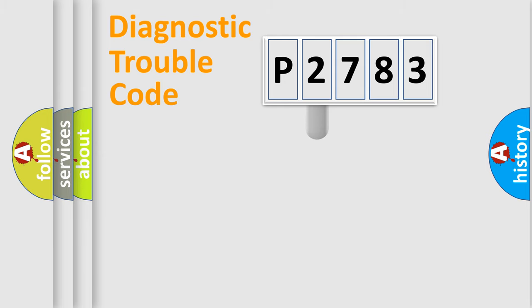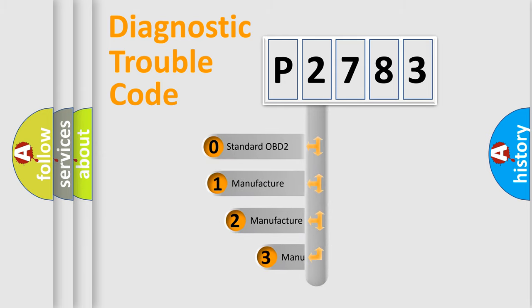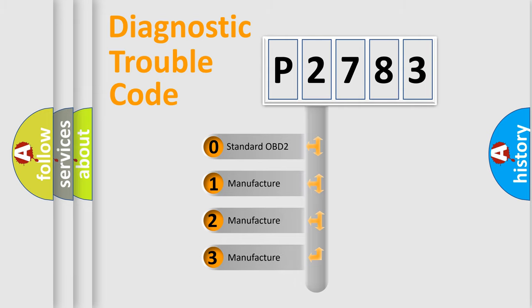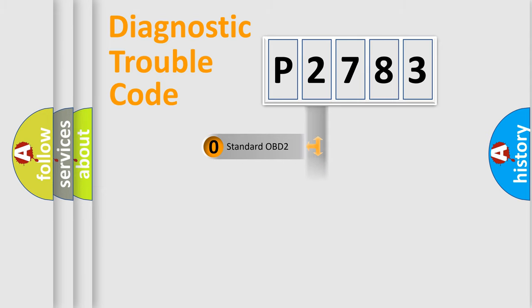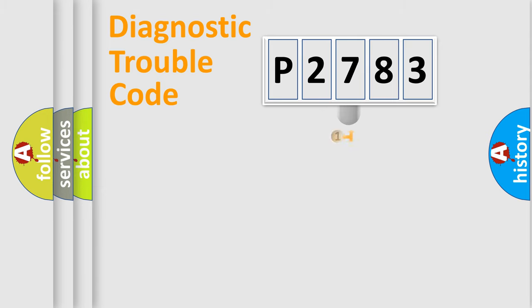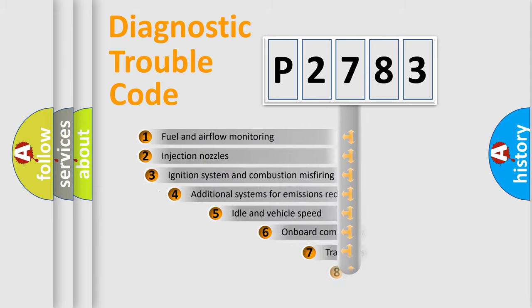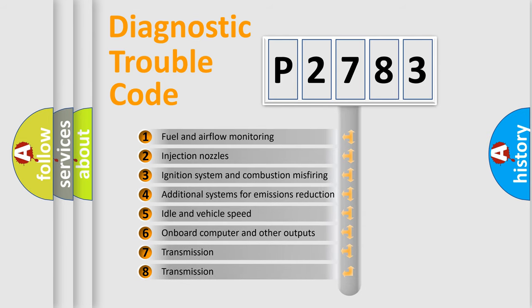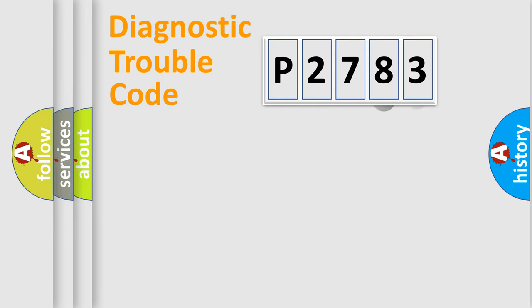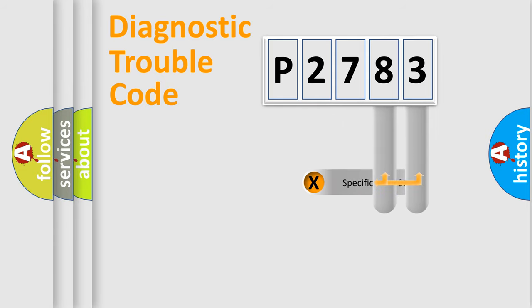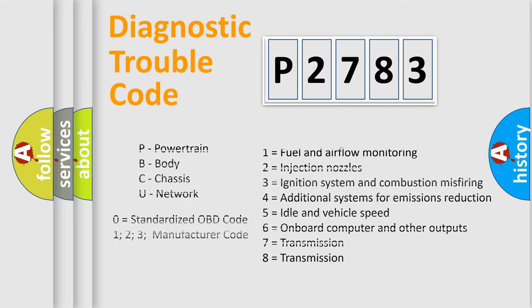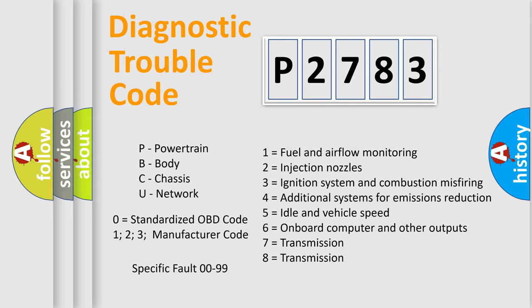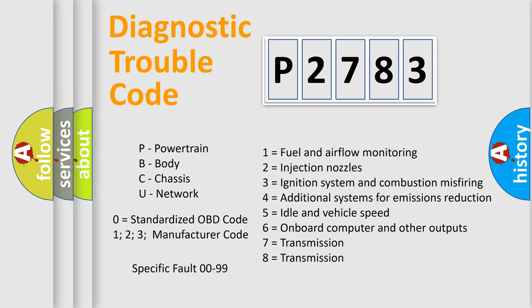This distribution is defined in the first character of the code. If the second character is expressed as zero, it is a standardized error. In the case of numbers 1, 2, or 3, it is a manufacturer-specific error. The third character specifies a subset of errors. This distribution is valid only for the standardized DTC code, and only the last two characters define the specific fault of the group — but only when the second character is zero.